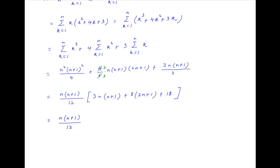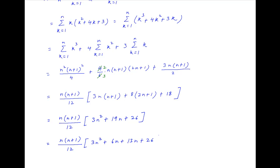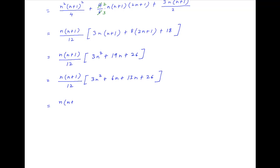This simplifies to n(n+1)/12 times (3n² + 6n + 13n + 26), which is equal to n(n+1)/12 times (3n(n+2) + 13(n+2)), which is equal to n(n+1)(n+2)(3n+13)/12.